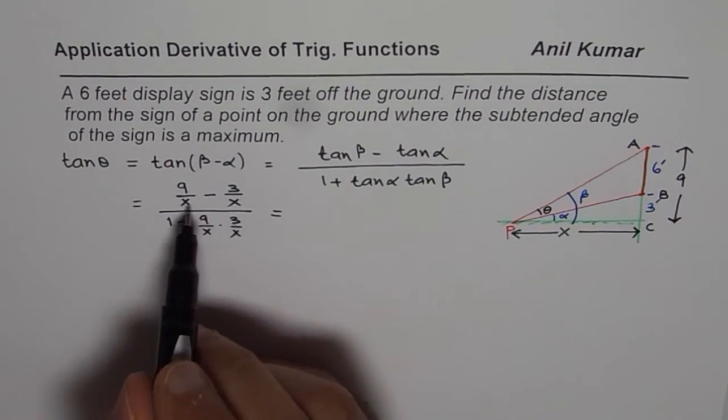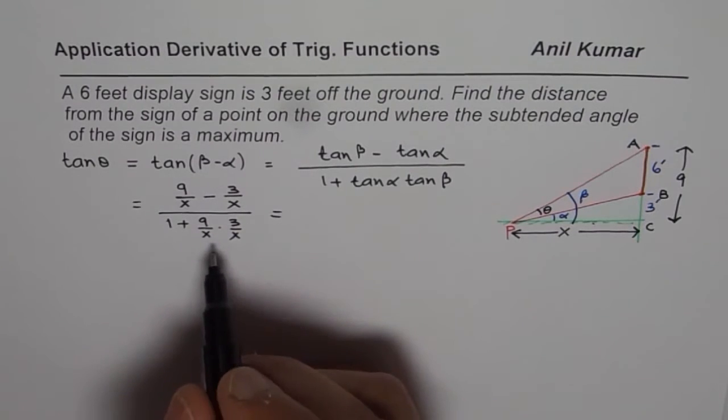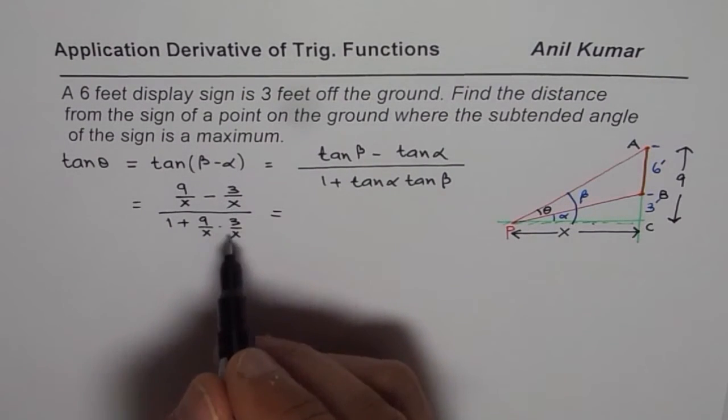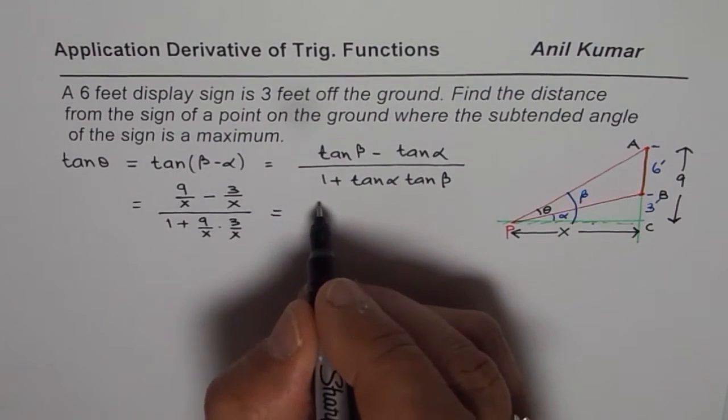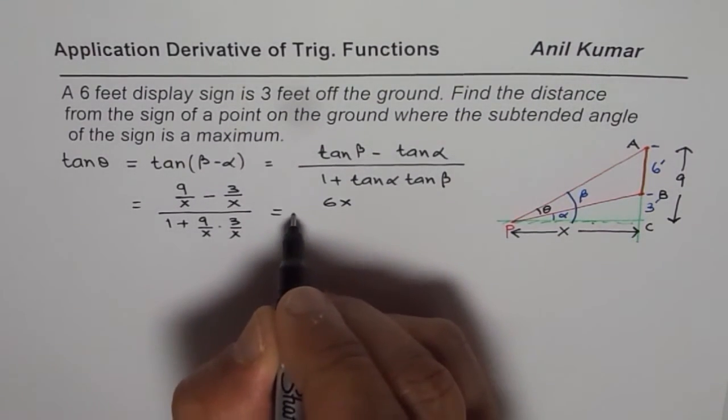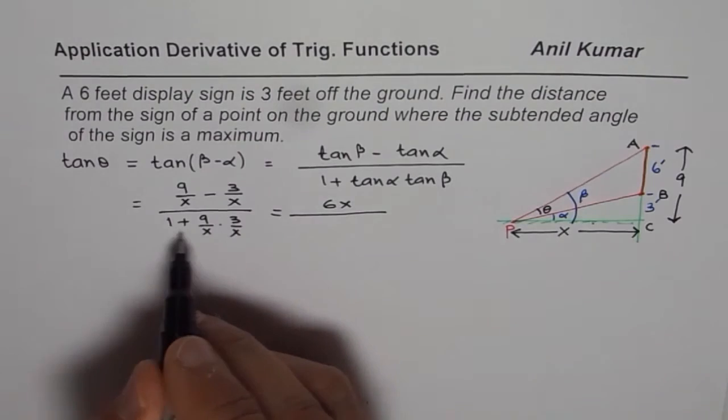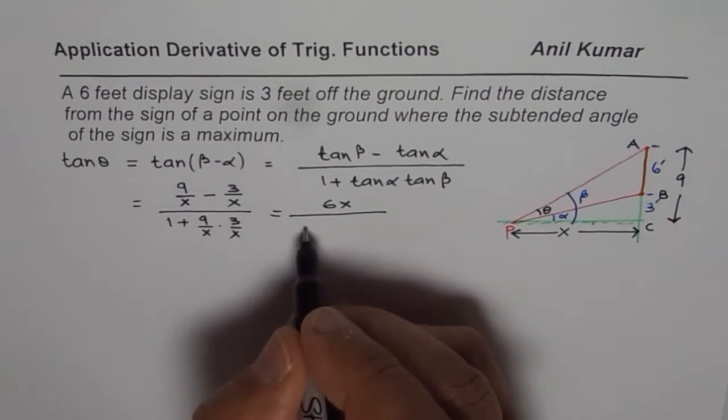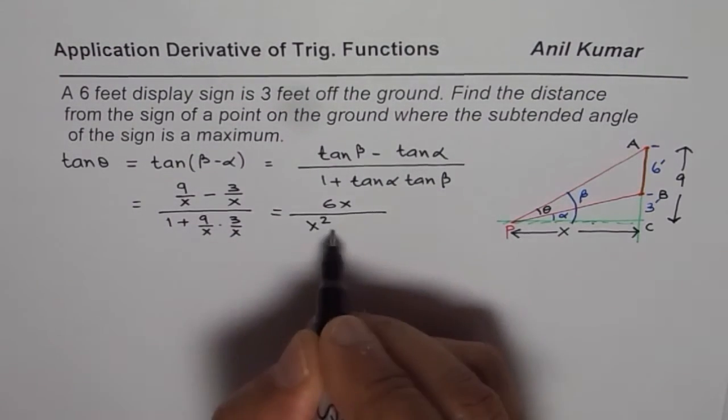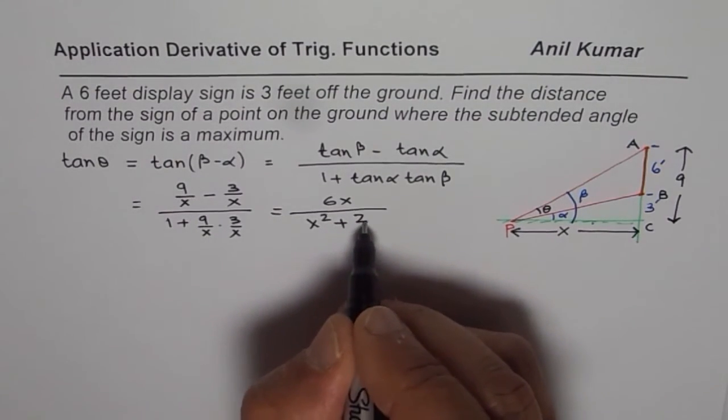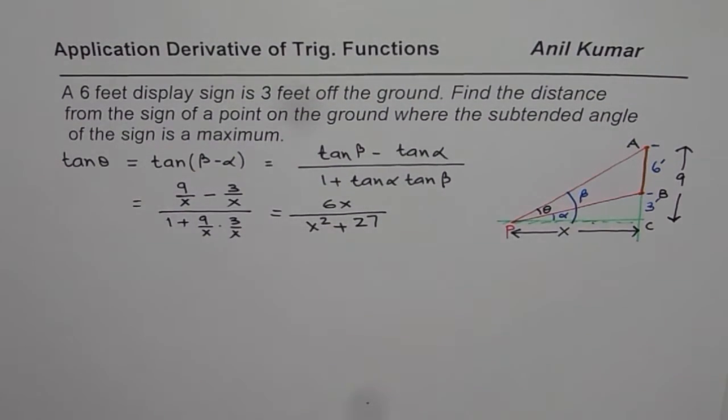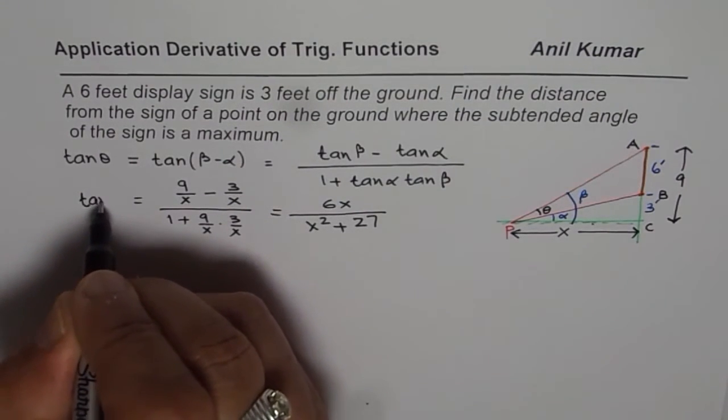Common denominator is X here. So what we will do is, we can just multiply by X square. So we will get 9X minus 3X, which is 6X. So we get 6X in the numerator divided by, if you multiply by X square, you get X square here, right? Plus, X square cancels 9 times 3, 27. So this is what you get. All this equals to tan theta.